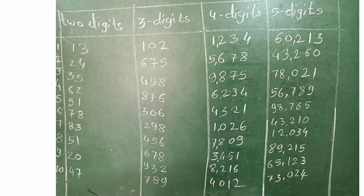For two-digit numbers, use each digit only one time. For example, take digit 1 and 3 to make 13; take 2 and 4 to make 24; take 3 and 5 to make 35. Like this, take any two digits and make a two-digit number, but make sure you are not repeating a digit within the same number.